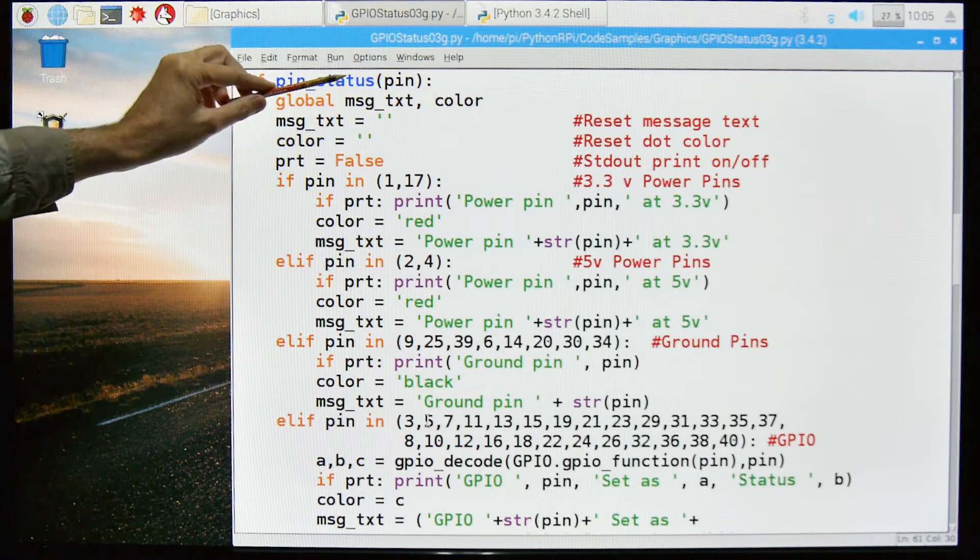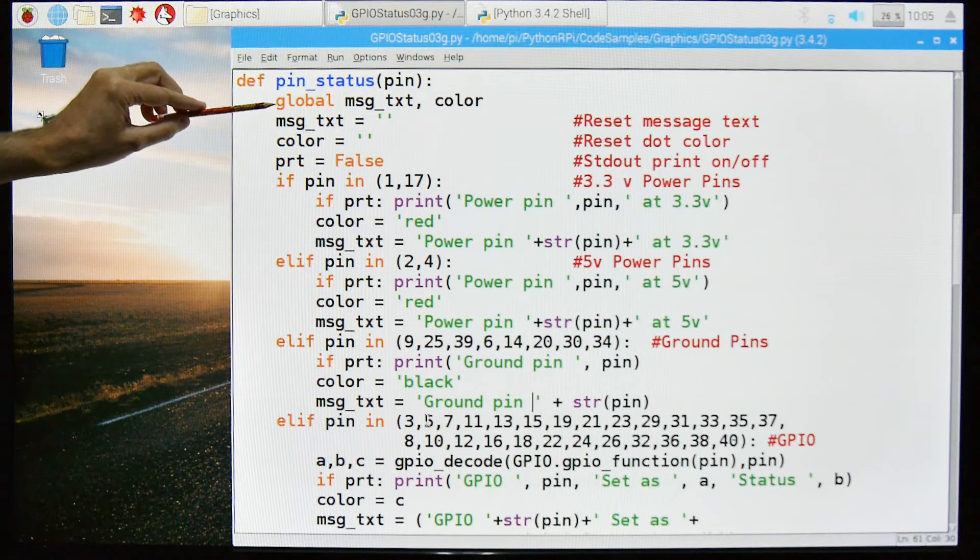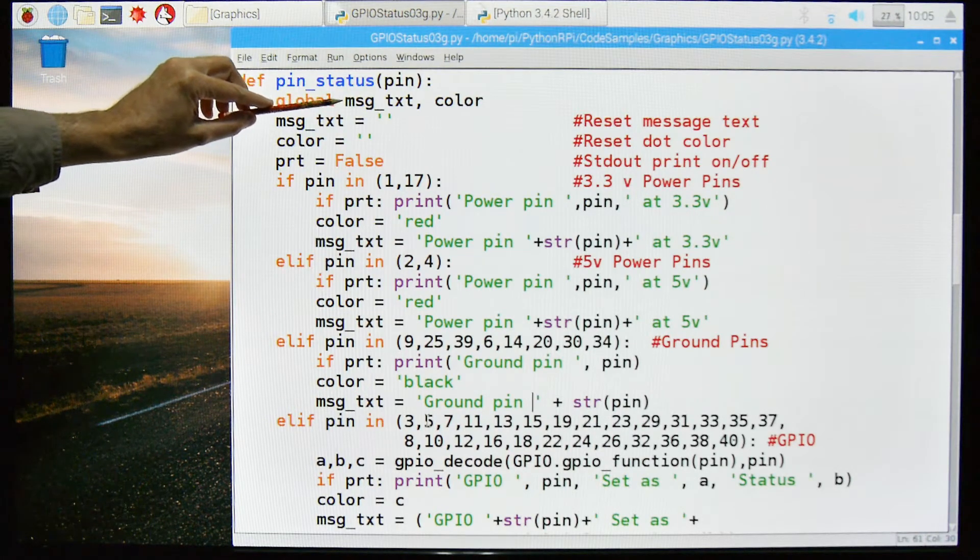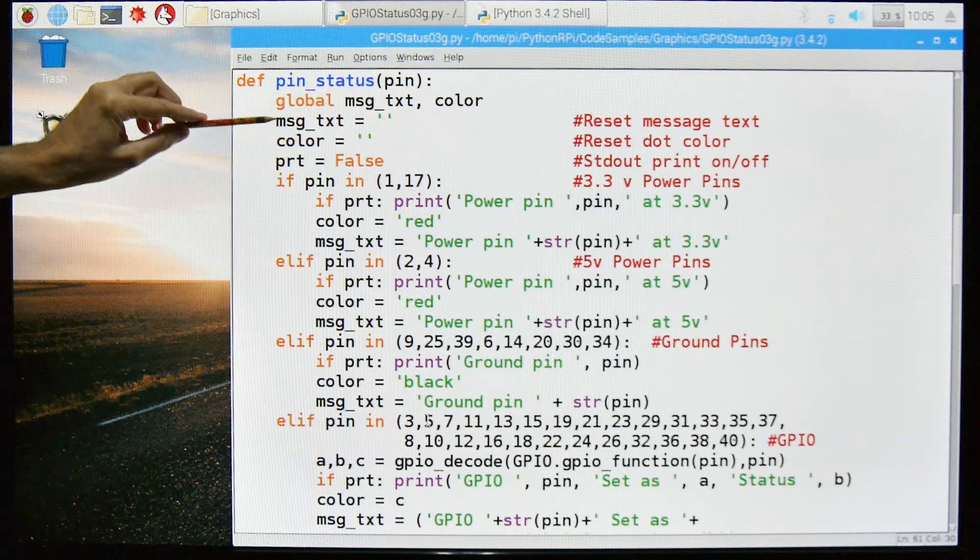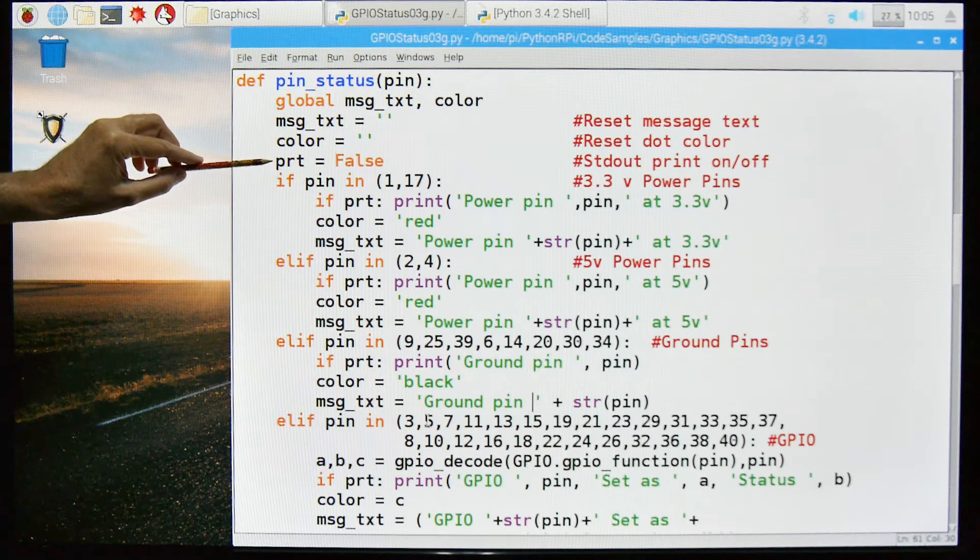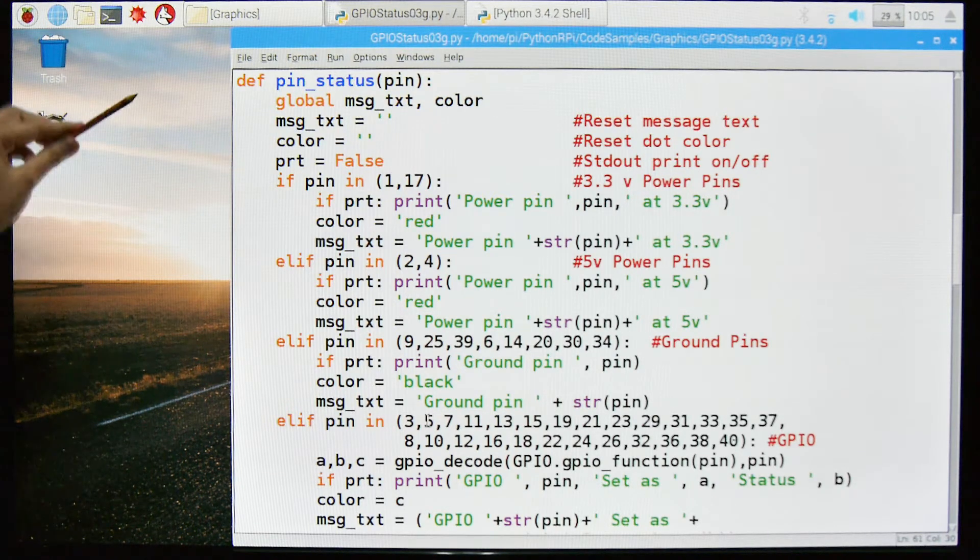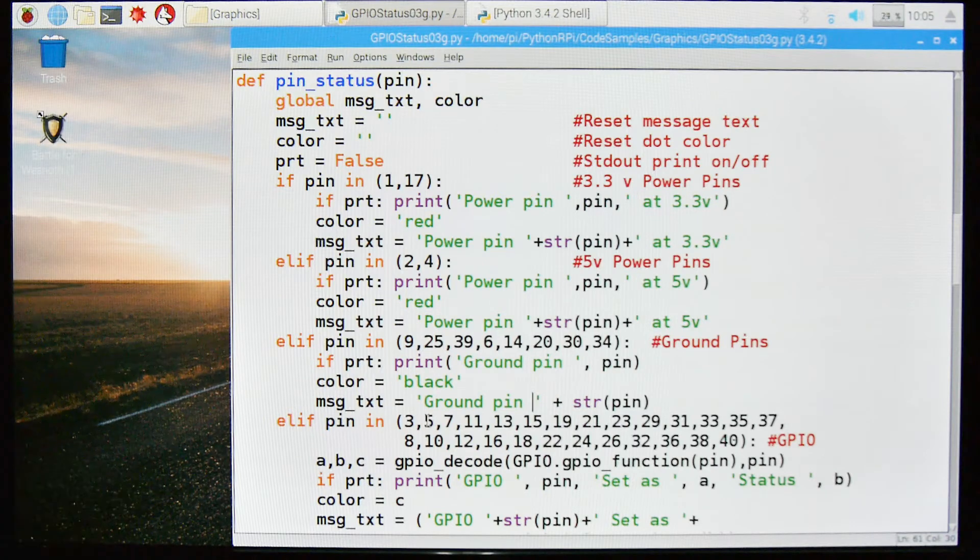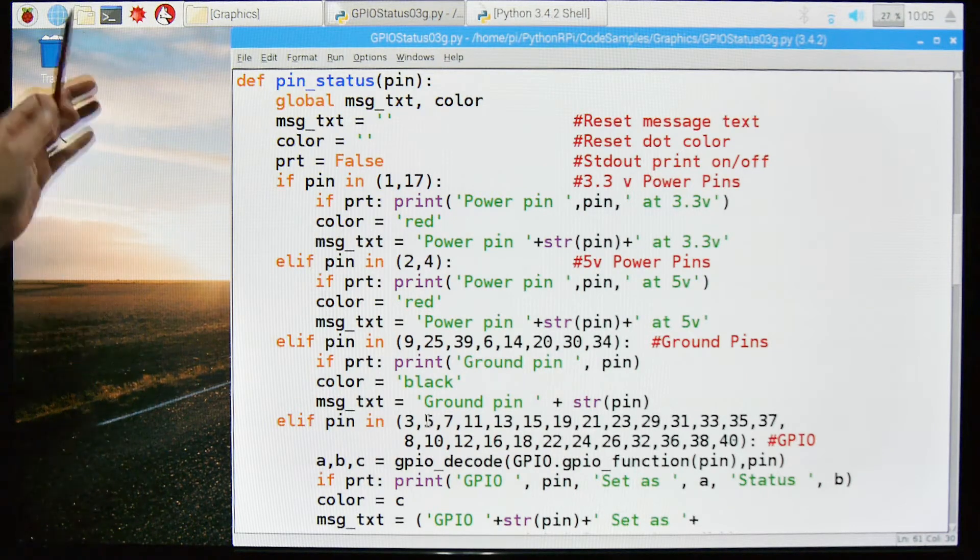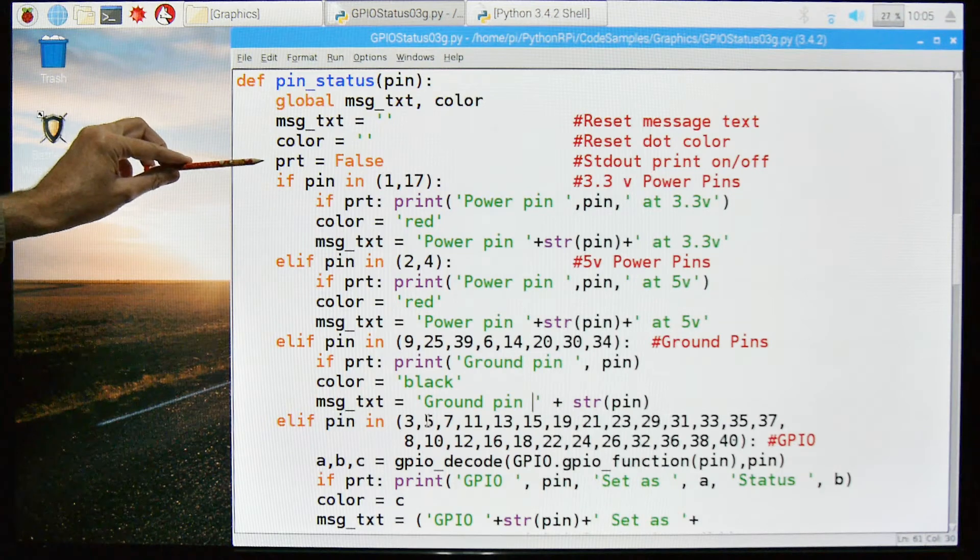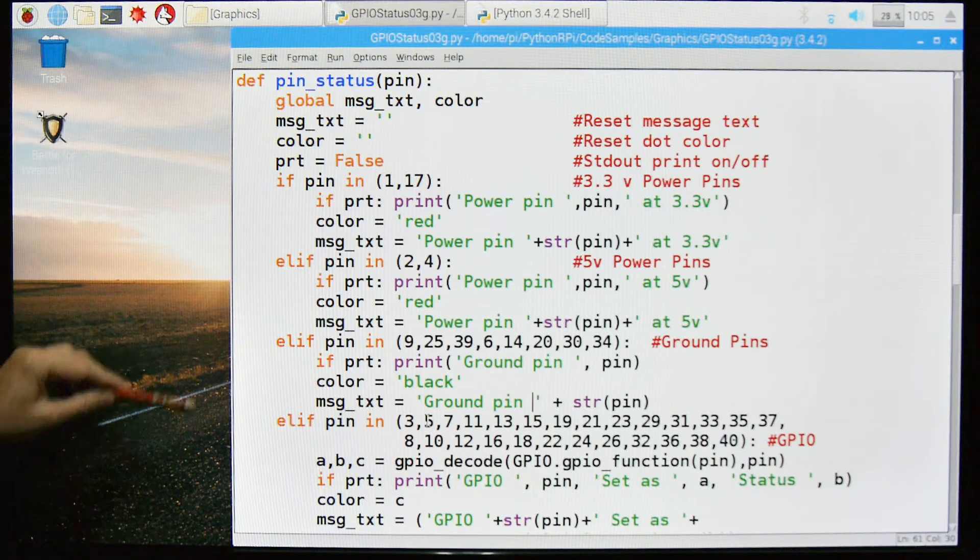This function tells us the status of the PIN and we pass it the PIN number. We have these global variables, message, text, and color. And first we're going to initialize those to nothing. And then this is a variable that if I turn on true, I will get standard output from Python. I'll get that running list of output from my program. However I don't usually want that because it causes a tremendous lag between what's happening on the PIN and what the output is. And it just consumes a lot of stuff. And the whole reason of writing this program is so I get a nice graphical output and not just a bunch of scrolling text. So right now I have it set to false so I won't get any output other than my graphic output.